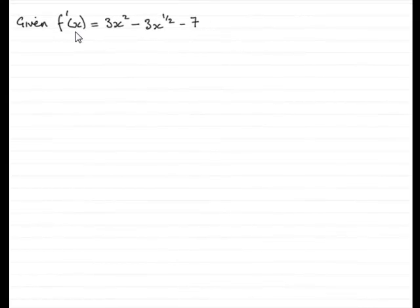Now, we're given that f dash x is equal to 3x squared minus 3x to the half minus 7 and asked to find f of x. So, first of all, knowing that f of x is the integral of f dash x,